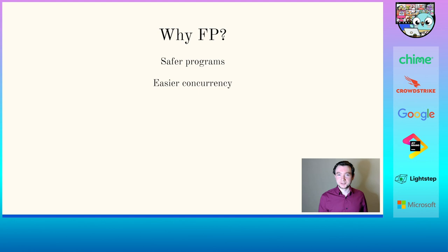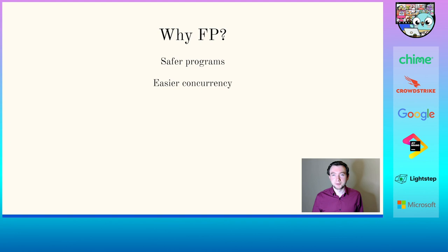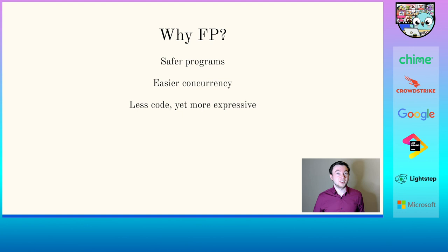Mentioning easier concurrency to Go programmers is a bit silly because it's also a main selling point for Go. Yet, if you have immutable data — which is core to many functional languages — multiple threads will never modify data of another thread, making it easier to write and think about concurrent code. You also tend to get less code but more expressive code — not dense like Perl, but declarative lines that remain readable.